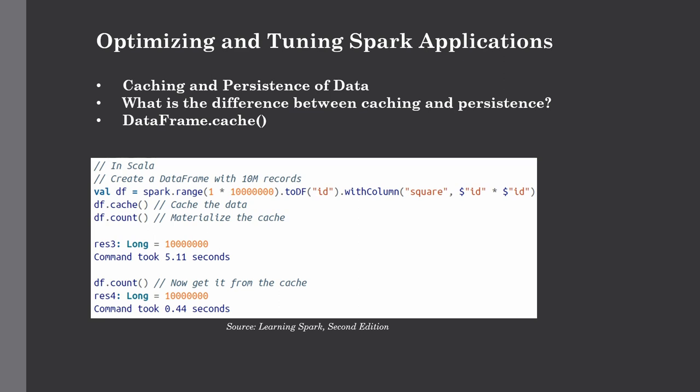Cache will store as many partitions read in memory across the Spark executors as memory allows. While data frames may be fractionally cached, partitions cannot be fractionally cached. For example, if you have 8 partitions but only 4.5 partitions can fit in memory, only 4 will be cached. If not all partitions are cached, the uncached partitions will have to be recomputed when accessed again, which will slow down your Spark jobs. You need to ensure you have enough memory to cache all the data.